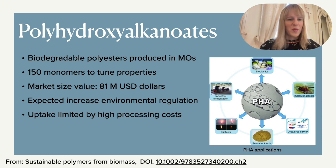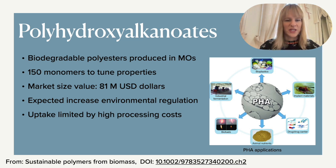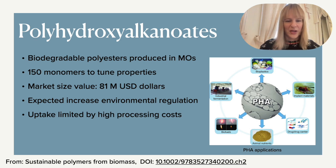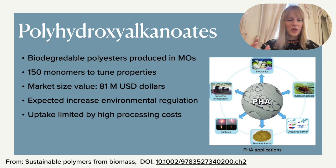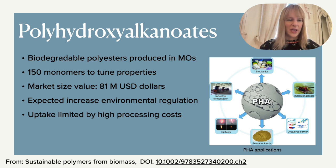PHAs are biodegradable polyesters that can be produced in a variety of microorganisms. As you can see in this image, they have many different applications — not just bioplastics, but also biofuels and biodegradable materials. What's special about this class of polymers is that you have a wide range of monomers you can use to really fine-tune the properties, making them suitable for many different applications.